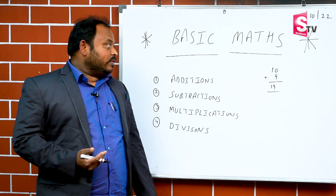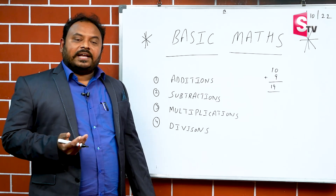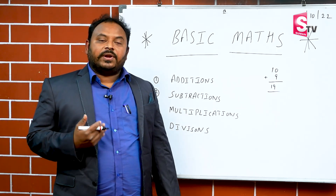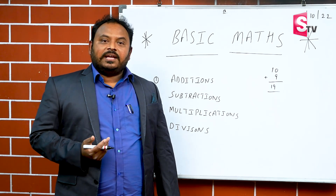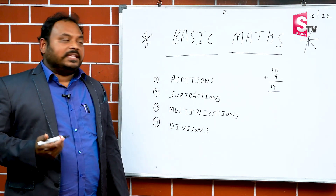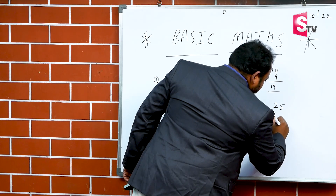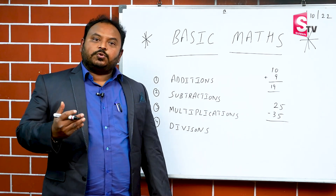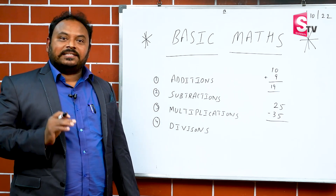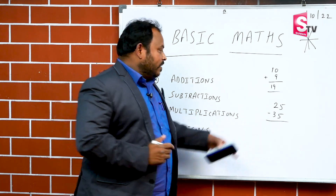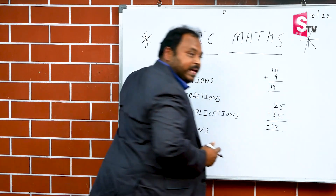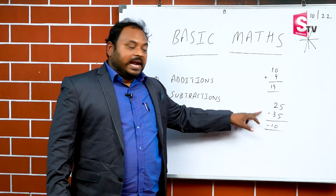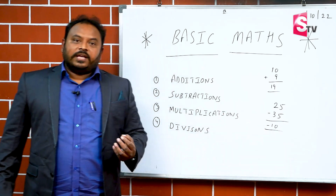Let's look at subtractions. Take 25 minus 35. Out of about 80 students, only 1 or 2% gave the exact answer. The answer is minus 10. In contrast, 35 minus 25 is plus 10. When it is a small number minus a big number, we have to put the minus sign. Students are not focusing on these basic principles.